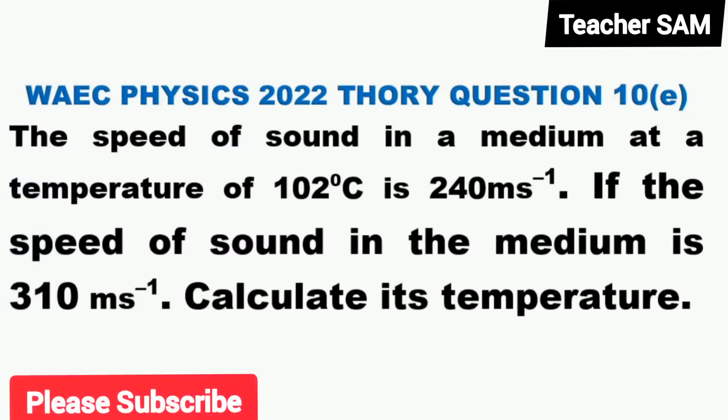Solution 10e. The speed of sound in the medium at a temperature of 102 degrees Celsius is 240 meter per second. If the speed of sound in the medium is 310 meter per second, calculate its temperature.